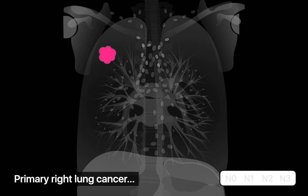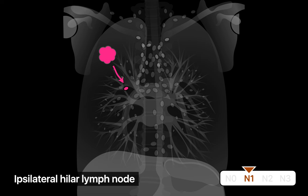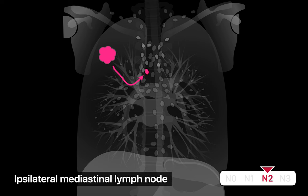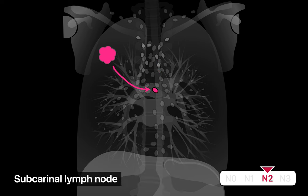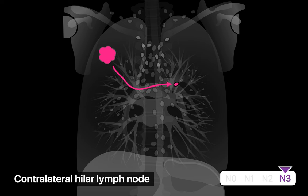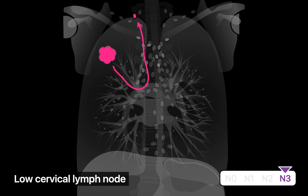If a patient has a primary lung cancer with no lymph node spread, the patient is N0. If lung cancer has spread as far as an ipsilateral hilar lymph node, that's N1. If it has reached an ipsilateral mediastinal lymph node, that's N2. And if it's reached a contralateral mediastinal lymph node, that's N3. Subcranial lymph nodes are always scored N2, regardless of whether you're dealing with a right-sided or left-sided lung cancer — they're effectively always ipsilateral mediastinal lymph nodes. Contralateral hilar lymph node spread is N3, and spread to a low cervical lymph node is also N3.